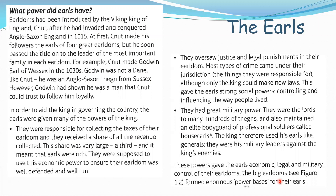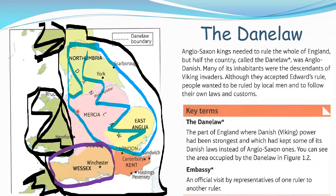So what about the earls? We've mentioned them several times - who were they and how much power did they have? Essentially, before the unification of England, before the Anglo-Saxon kings had unified it into a single country, it was about four or five mini kingdoms. When the country was unified, those mini kingdoms became the earldoms: Northumbria, Mercia, East Anglia, Wessex and Kent - five earldoms run by five earls.